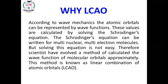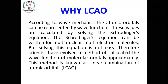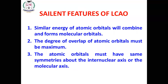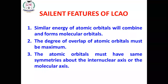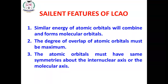LCAO is an approximation theory. It explains bond formation by linear combination of two atomic orbitals — how they combine and what the features of this theory are. The main features are: atomic orbitals should have the same energy, the degree of overlapping should be maximum, and they should have the same symmetry. These are the three important features of LCAO theory.